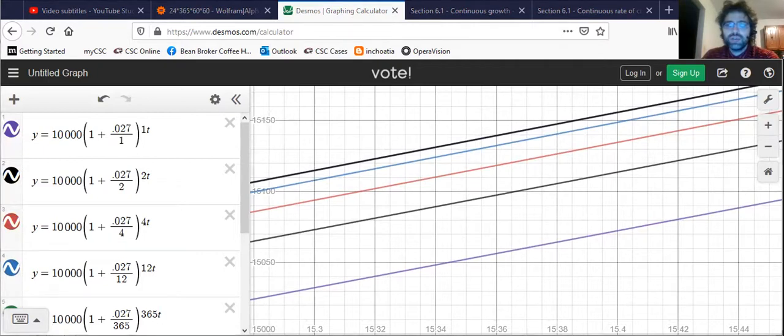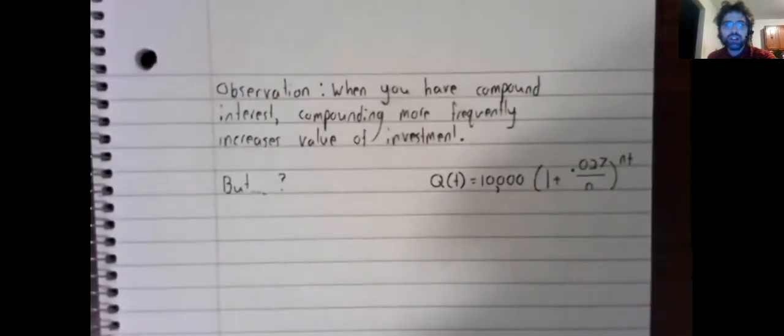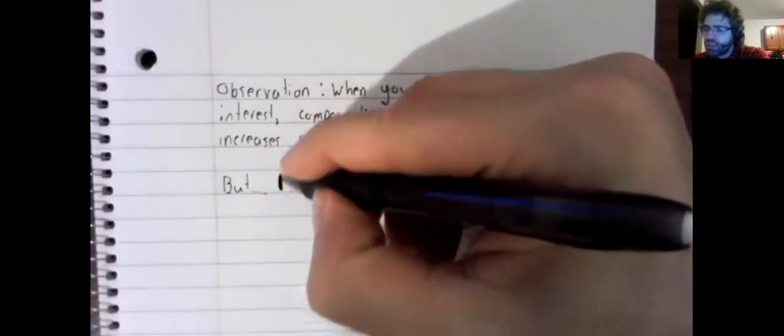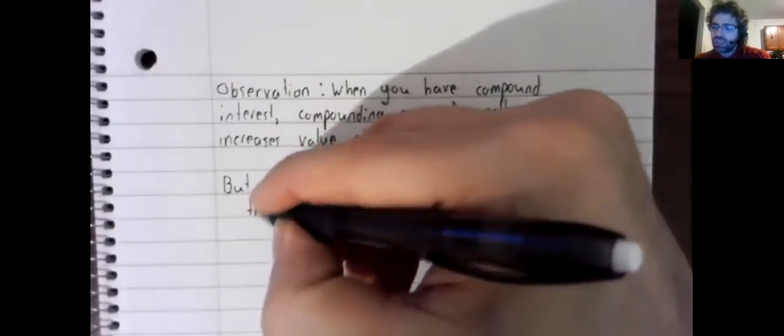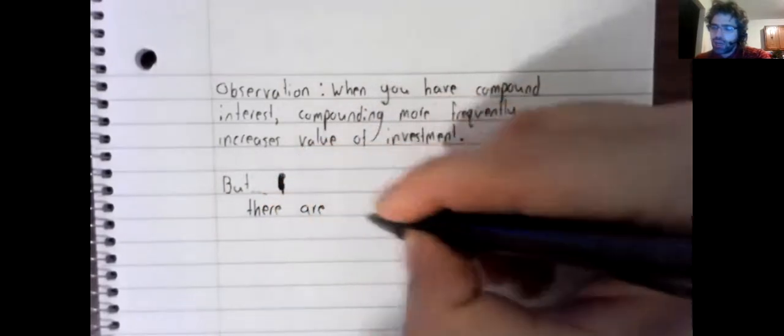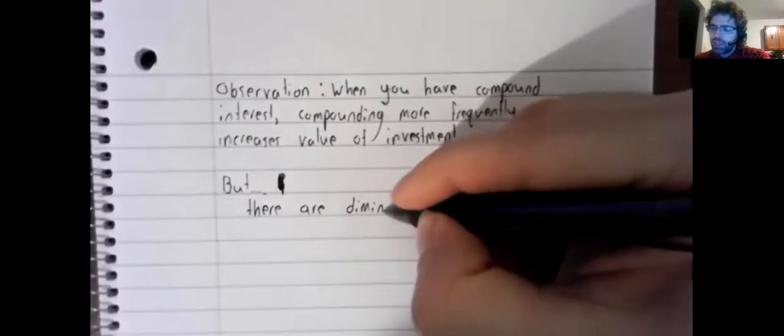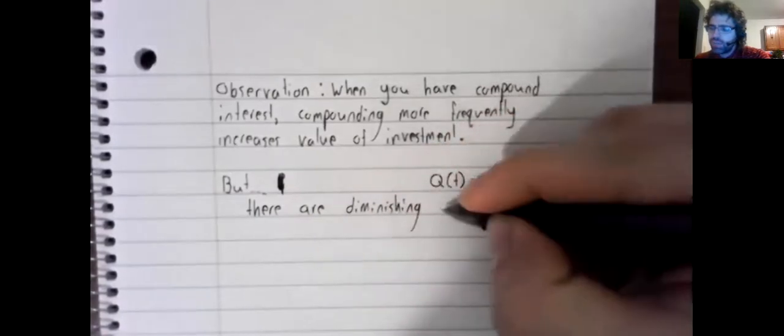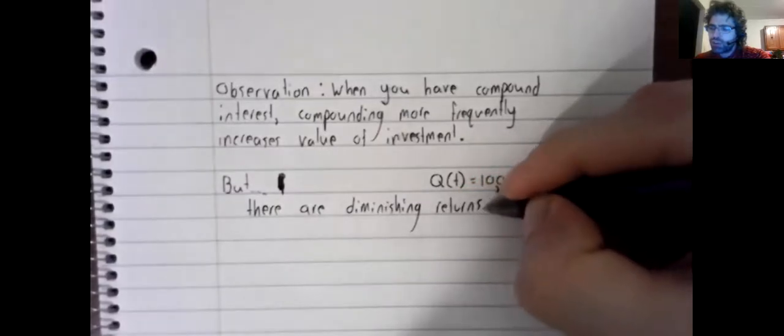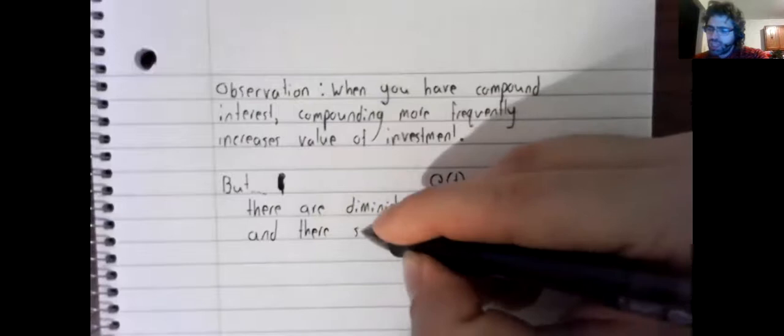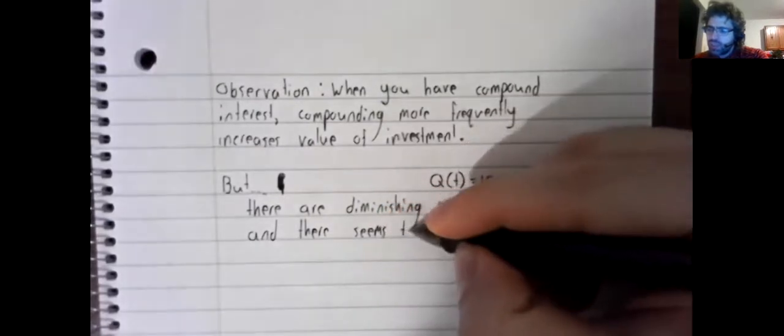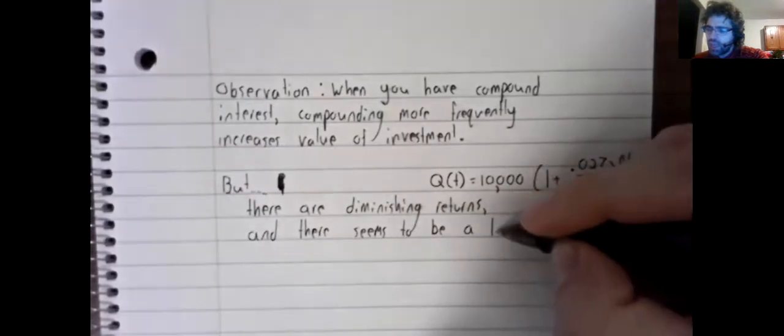So, to finish this thought. Compounding more frequently increases the value of the investment. But, and now we know how to finish this sentence. There are diminishing returns. And there seems to be a limit.